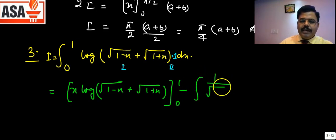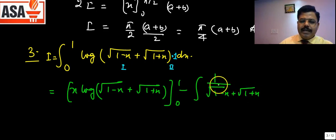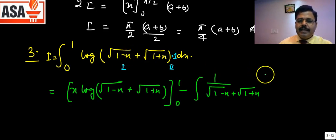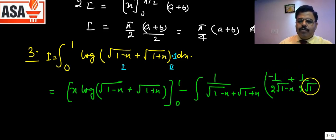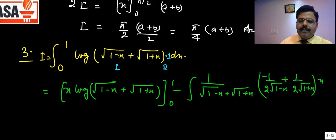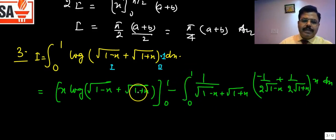The first part gives x·log(√(1−x) + √(1+x)) evaluated from 0 to 1. The derivative of log(√(1−x) + √(1+x)) is (1/(√(1−x) + √(1+x))) multiplied by [−1/(2√(1−x)) + 1/(2√(1+x))], and the integral of x is x. Limits are from 0 to 1.